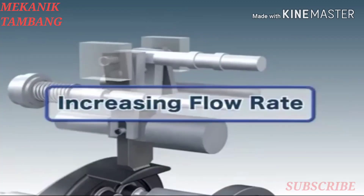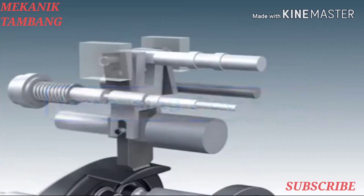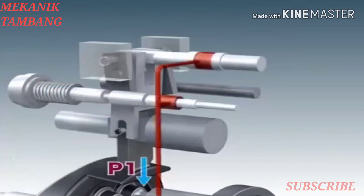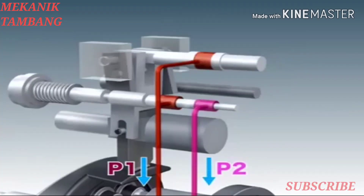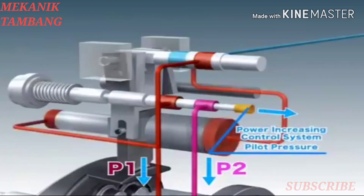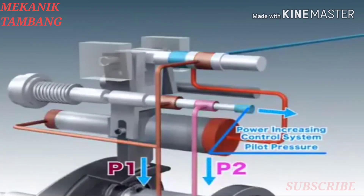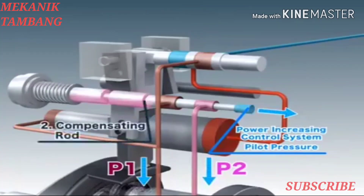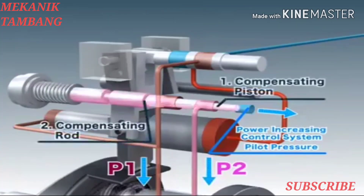Next, we will explain how the regulator increases the flow rate. When the pilot pressure of the pump, P1, or of a companion pump, P2, decreases, or when the pilot pressure is released by the power increasing control system, the compensation rod and piston are pushed back by their springs.